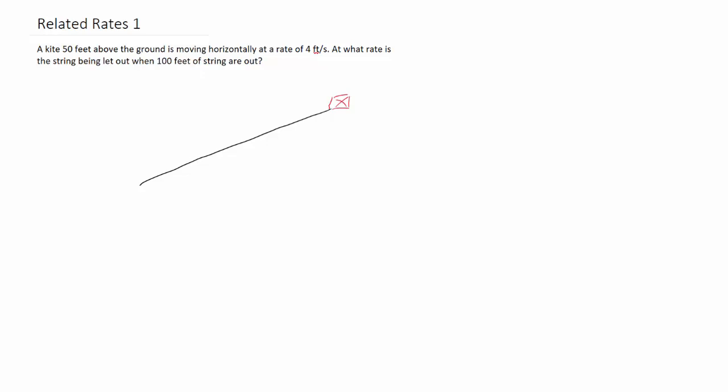A kite 50 feet above the ground is moving horizontally at a rate of 4 feet per second. At what rate is the string being let out when 100 feet of string are out?